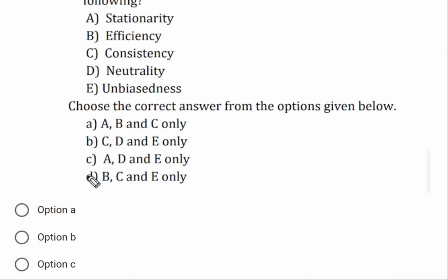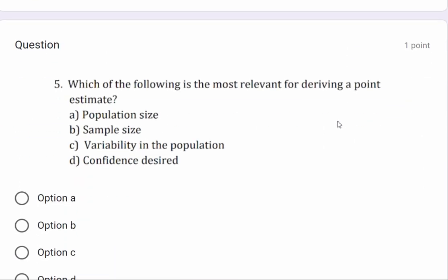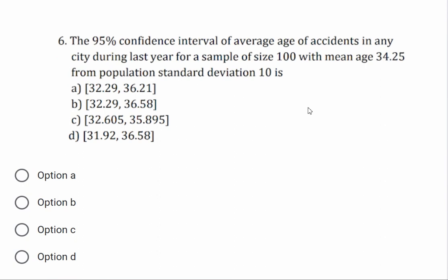The correct answer is option b. Which of the following is most relevant for deriving a point estimate? The point estimate is based on sample statistics. For the 95% confidence interval for the average age of students in an institute, given a sample of 100 with mean age 34.25 from a population with known standard deviation, the answer is option B: 32.29 to 36.0.